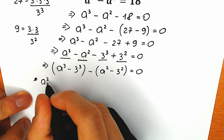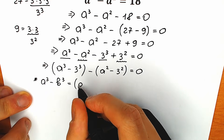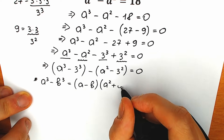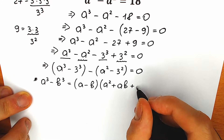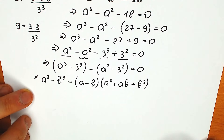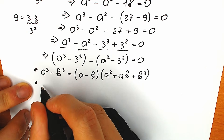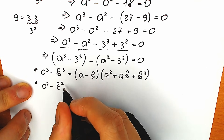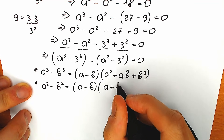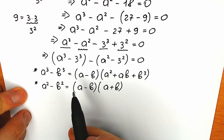Let's remember these formulas from school. First formula — difference of cubes: a³ minus b³ equals (a minus b)(a² plus ab plus b²). Second formula — difference of squares, the well-known formula everyone knows: a² minus b² equals (a minus b)(a plus b). So we know everything, we remember it — this is our school knowledge. Now let's apply these formulas.